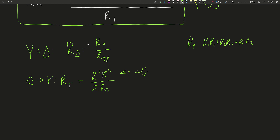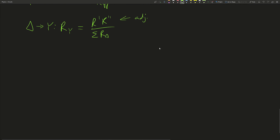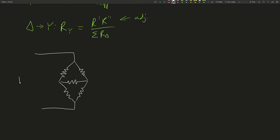With these two formulas, we can effectively move between these two configurations of resistors. A really prominent use case is finding the equivalent resistance of a resistor network that looks almost like a Wheatstone bridge — a diamond shape with a resistor in the middle. Without a Y-delta transform, it's really hard because there are no resistors that are directly in parallel and no resistors that are purely in series.